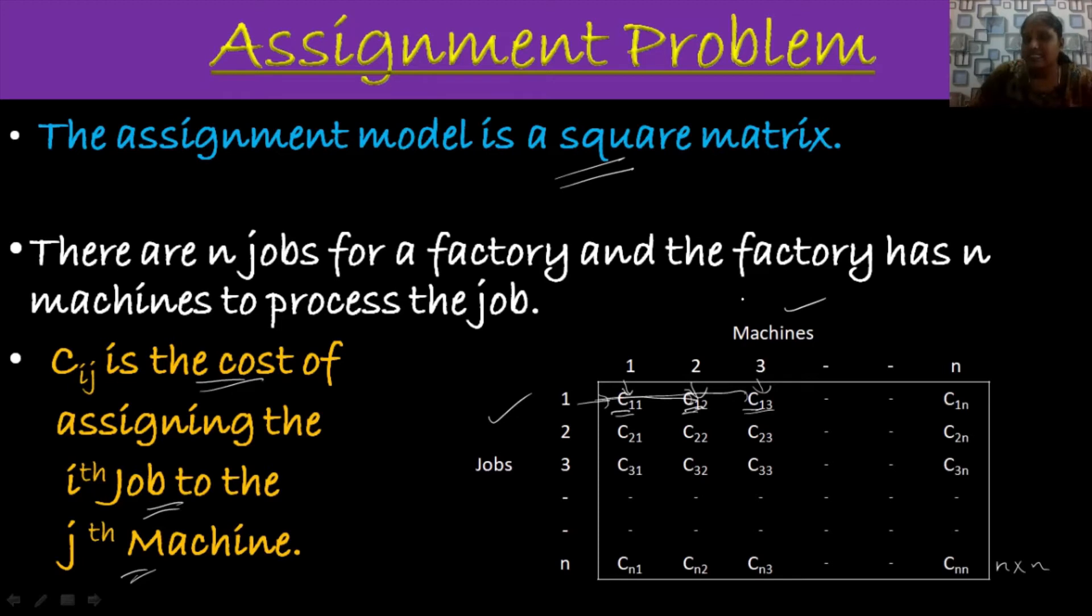Since the assignment problem is an N by N matrix, generally we have N factorial possible ways of assigning assignments. That is, we are going to make N factorial possible assignments. So the complete elimination of all these assignments is not possible.